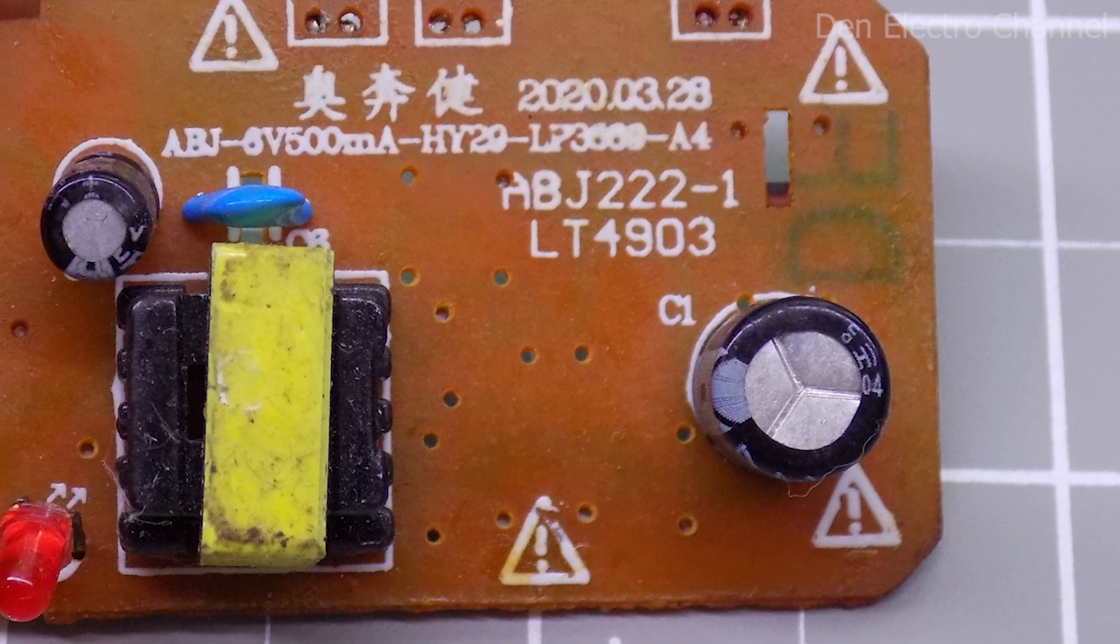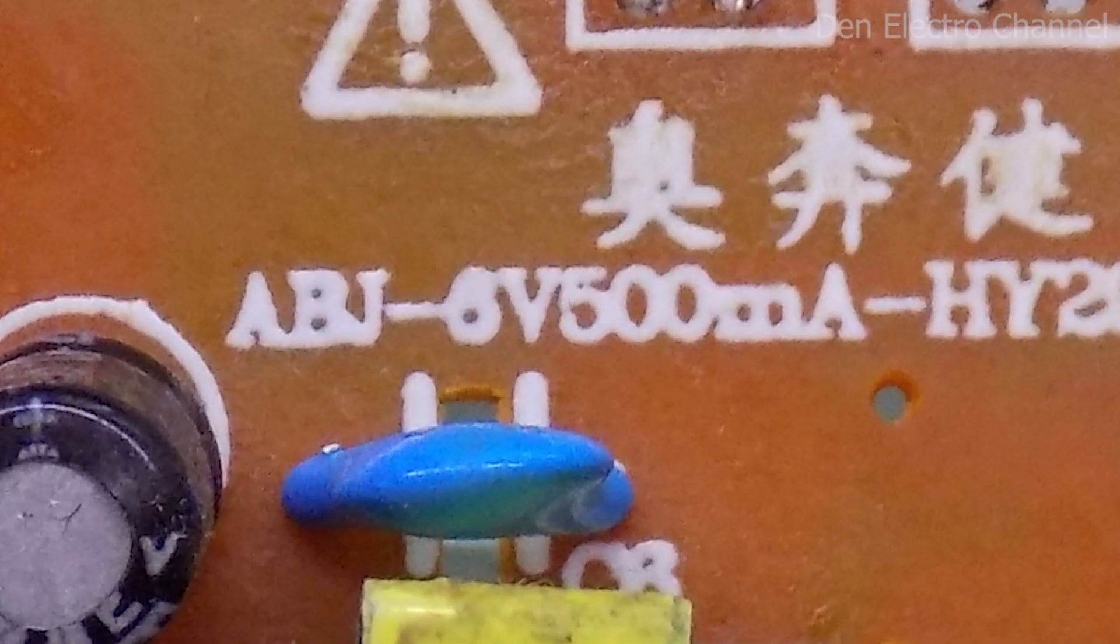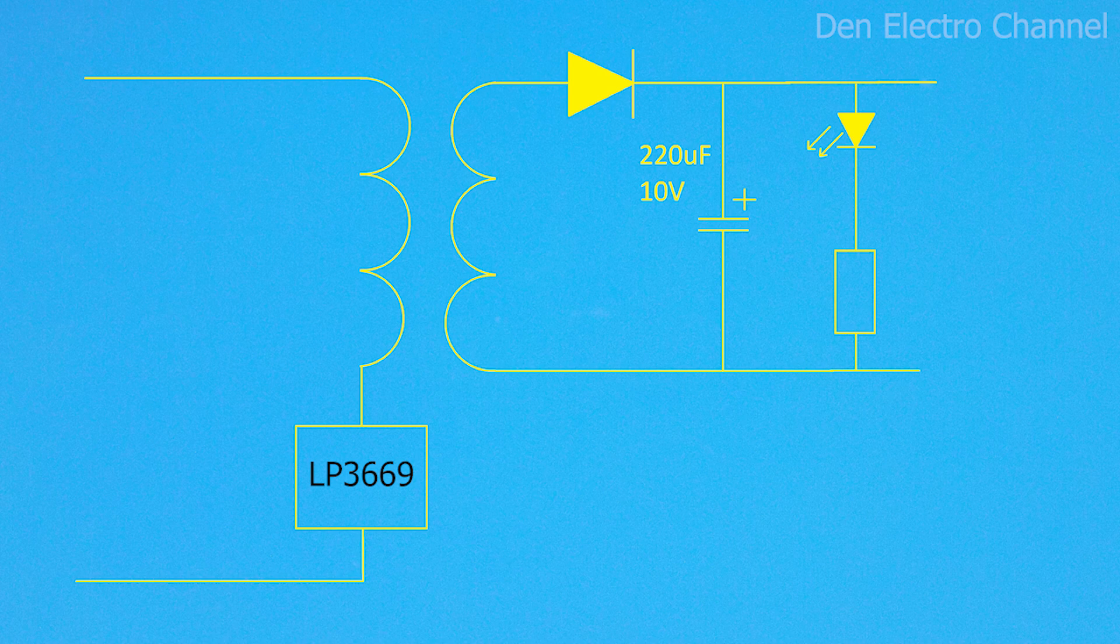As I already said, the power of this power supply is small. According to the manufacturer, it should produce 6 volts 500 milliamperes. The peculiarity of this power supply is in its circuit. In this picture it is greatly simplified, but I think the meaning will be clear.